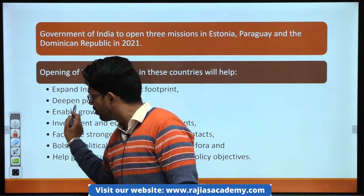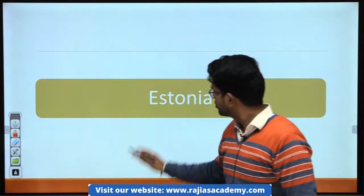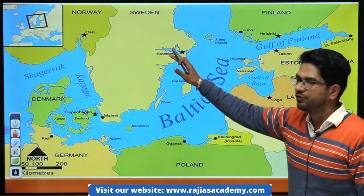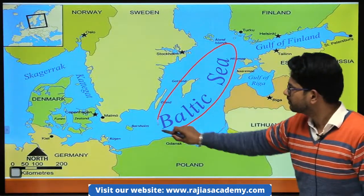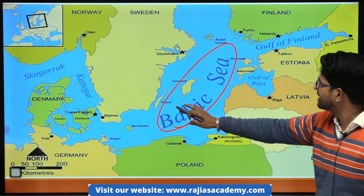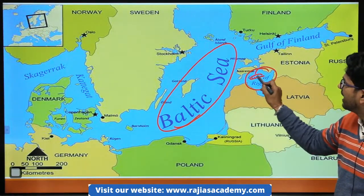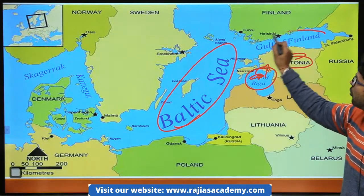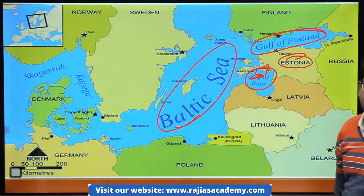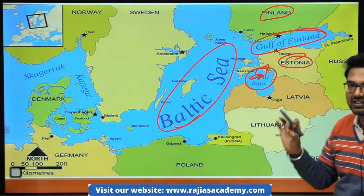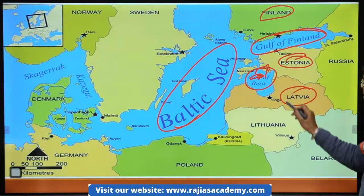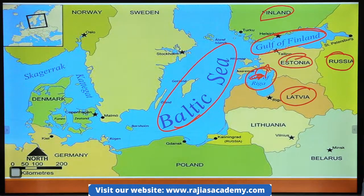Let's discuss about the location of these areas. First, Estonia — so this is the map of Europe. Yahan par aap Baltic Sea dekh sakte hain. Ye area hai Baltic Sea ka, ye Gulf of Riga hai. Aur is ke just upar aapko kya dikhta hai — Estonia. Aur is ke upar aa jata hai Gulf of Finland, aur us se upar hai Finland. Agar baat karein Estonia kin countries se border share karti hai — one is Latvia and the other is Russia.